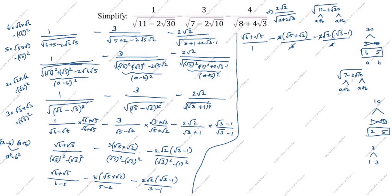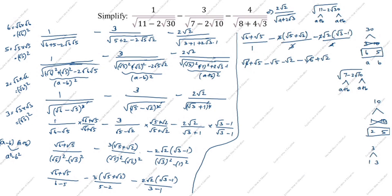Expanding the brackets with the minus signs: root 6 plus root 5 minus root 5 minus root 2 minus (root 2 times root 3 is root 6) plus root 2. Now cancelling: root 6 and minus root 6 cancel, plus root 5 and minus root 5 cancel, minus root 2 and plus root 2 cancel. The final answer equals 0. Thanks for watching this video.